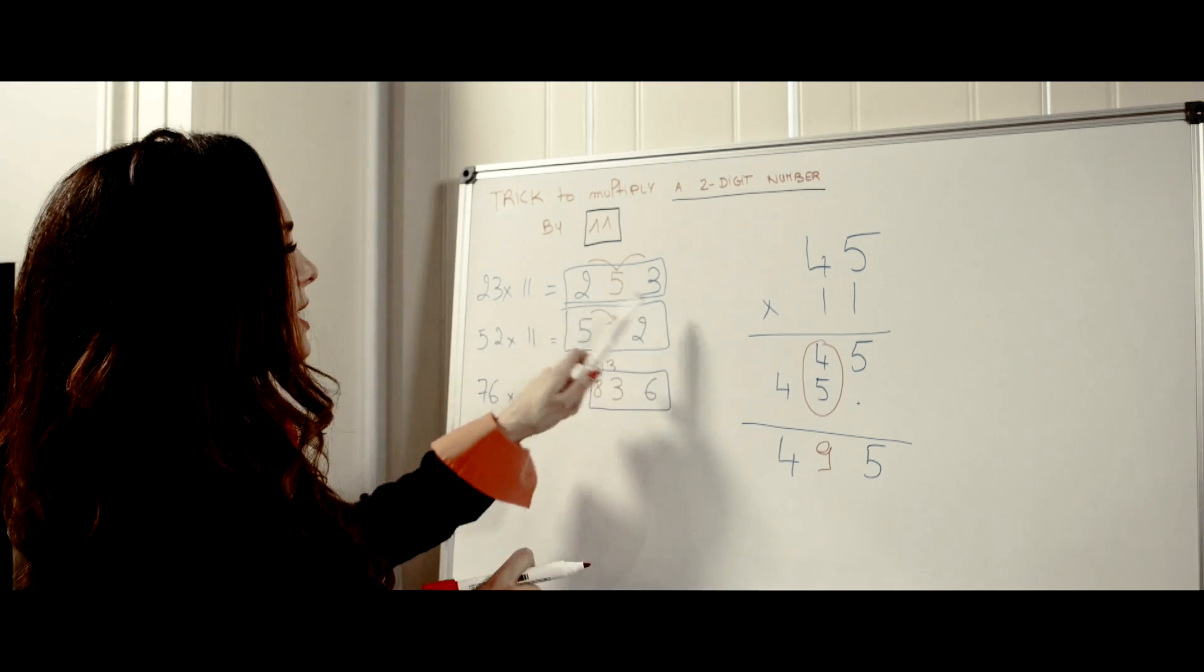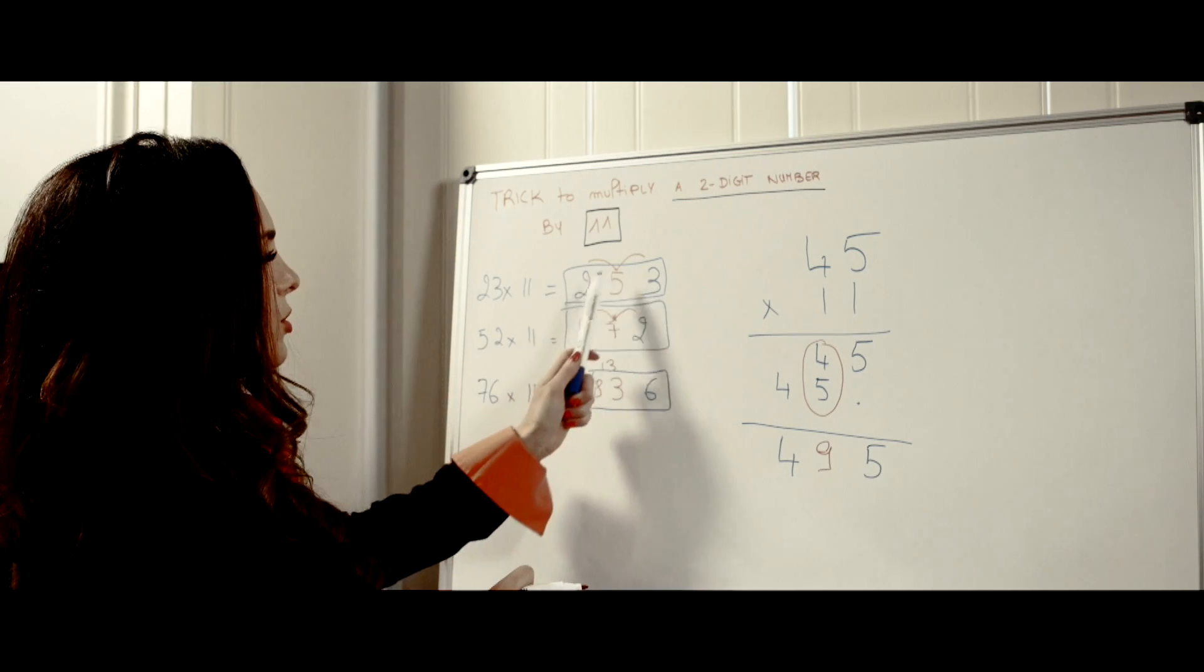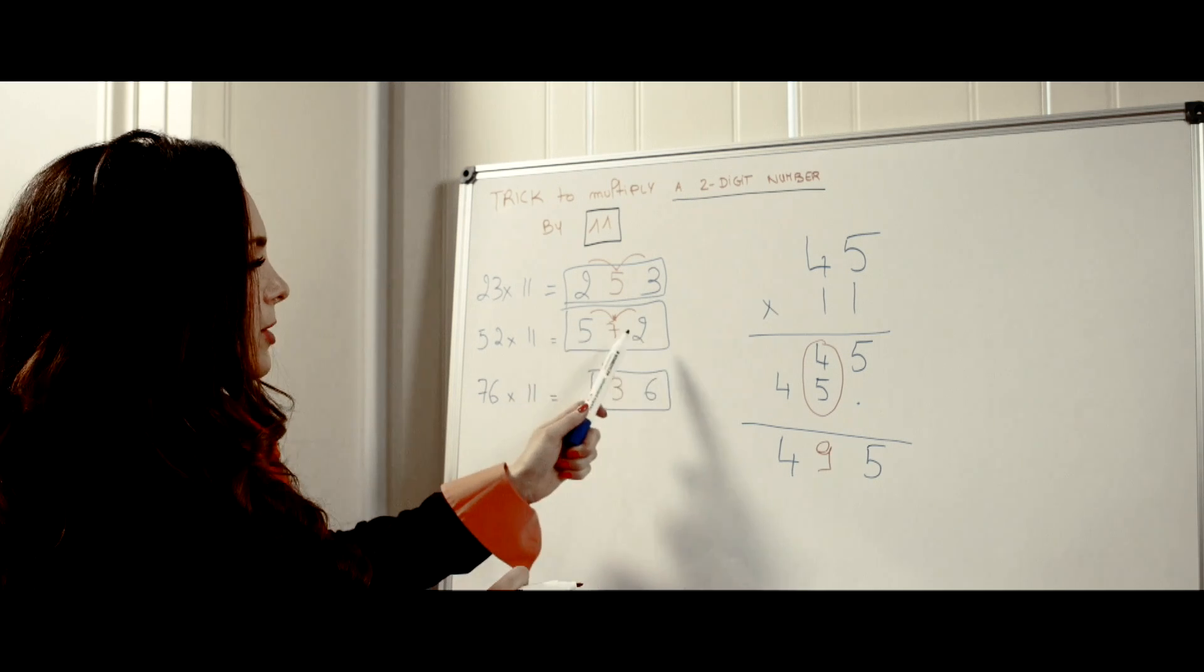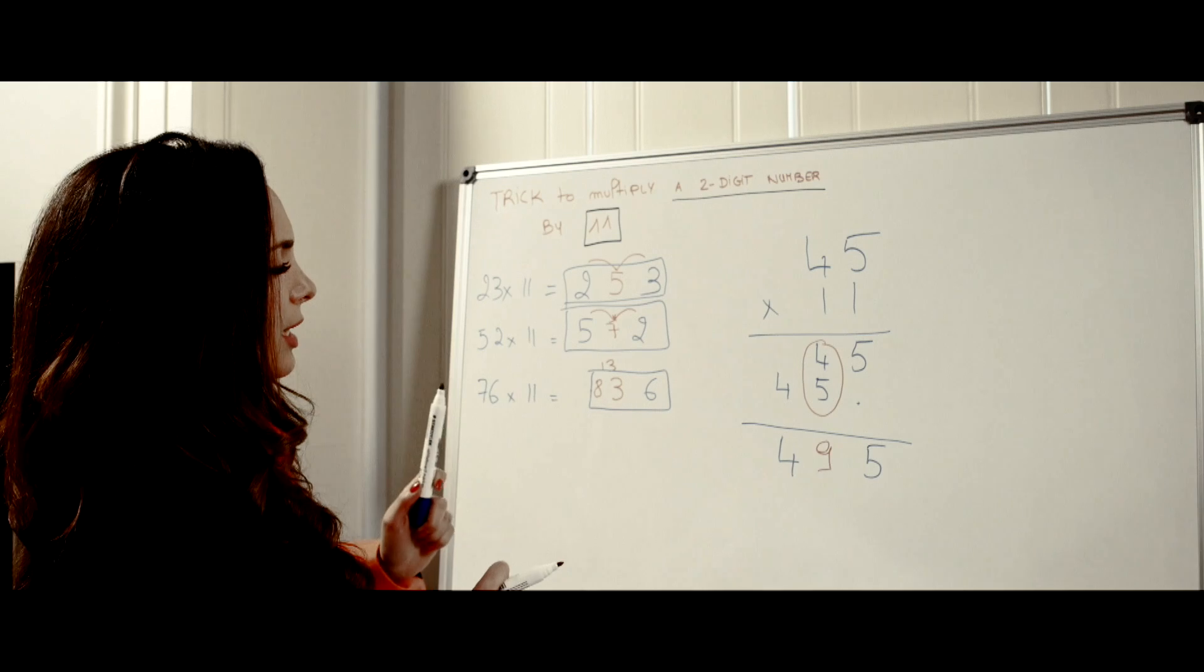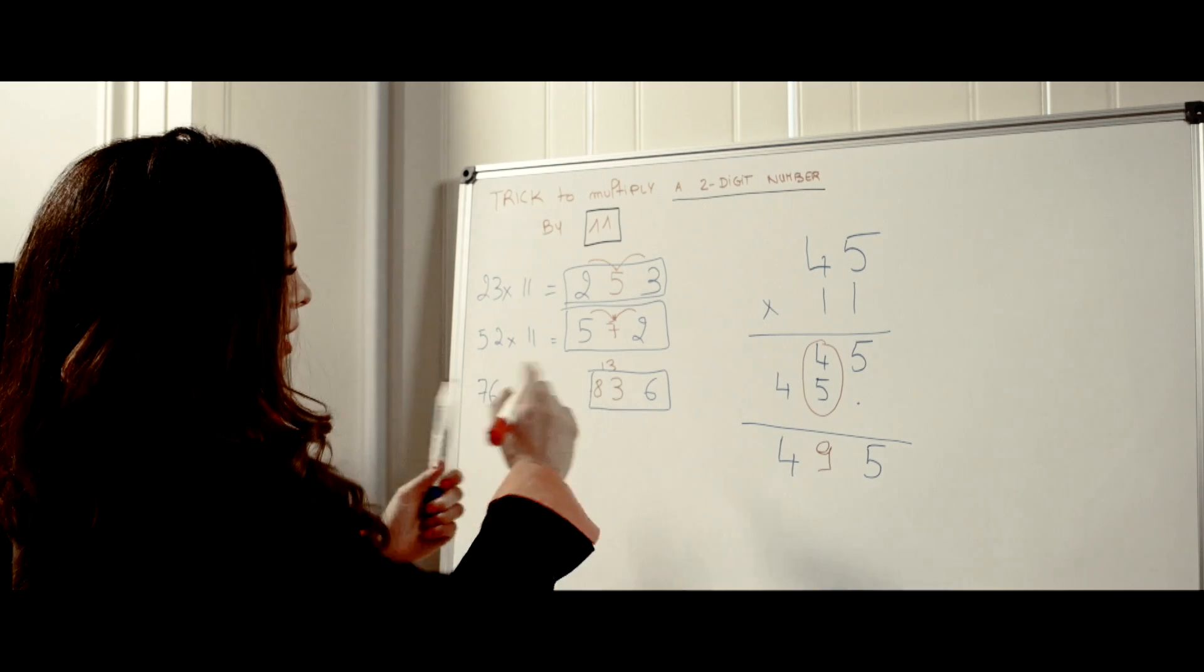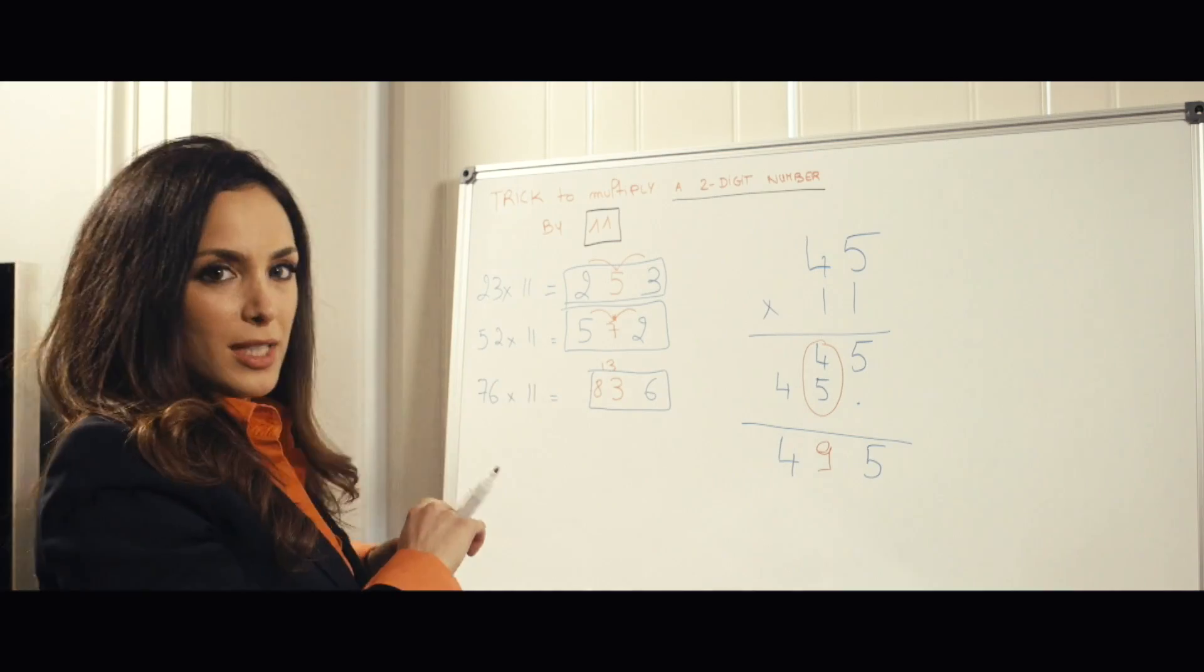So this is the trick. When it's easy and the sum of 2 plus 3 is below 10 or 5 plus 2 is below 10 you just put it in the middle. If it was say 13 like here then you'll just put a 3 here and you add 1 to the 7 that was here.